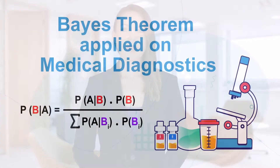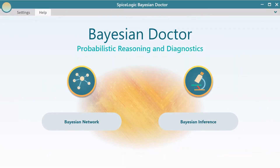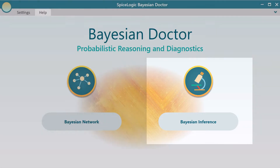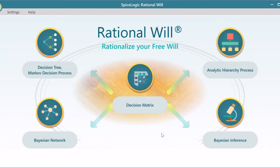Today, I will demonstrate how to perform a diagnosis with the SpiceLogic Bayesian Doctor, or Rational Will, software. We use our common sense all the time to update our beliefs based on our observations. But when Bayes' theorem is incorporated with our common sense, the diagnosis becomes more logical and rational. The Bayesian inference tool basically lets you utilize Bayes' theorem to update your beliefs step by step.